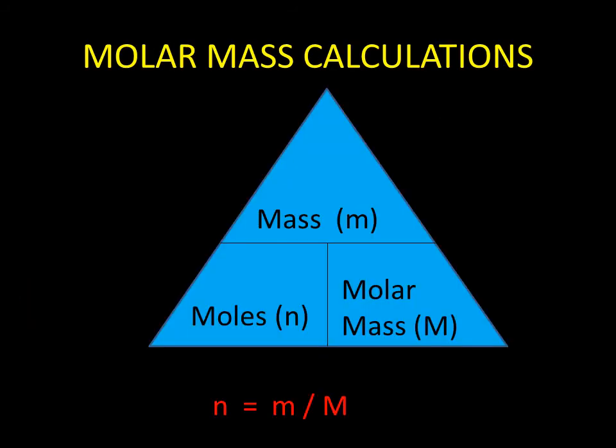Again, we can express this number of moles, but this time in terms of mass rather than number of items. So here we have that the number of moles is equal to the mass, which is little m, divided by the molar mass, which can be calculated by adding up the atomic masses from the periodic table.